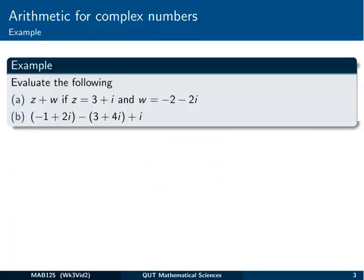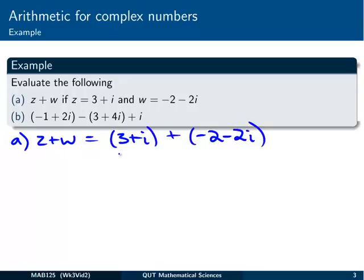So let's see what these examples are. The first one we've got there is an addition of z plus w, so z is 3 plus i, w is minus 2 minus 2i. So we've got part a, z plus w. Okay, here's our first number, and here's our second number, just writing it out in full.